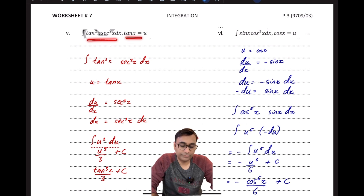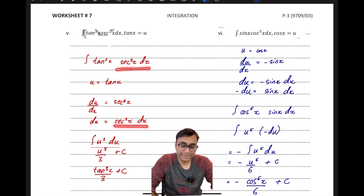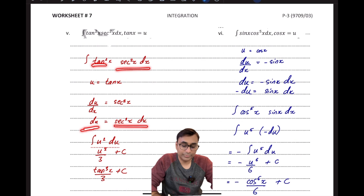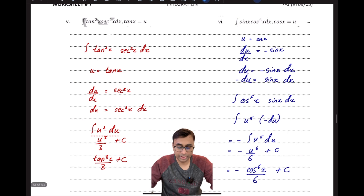In another example the integral initially looks very complicated, but using the given substitution and differentiating it, we get that x² dx can be directly replaced by du and tan x is replaced by u, giving the simple integral ∫u² du. Applying the power formula and substituting back gives the final answer.